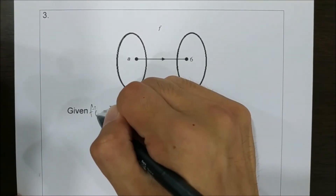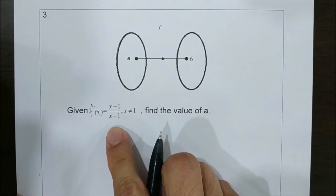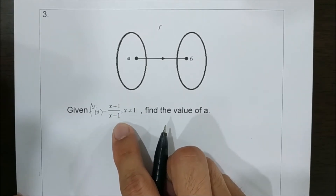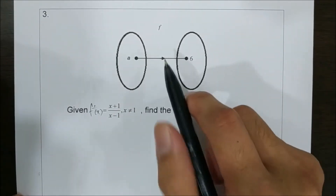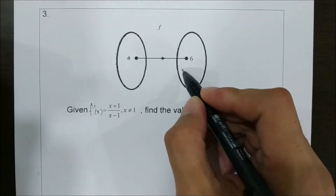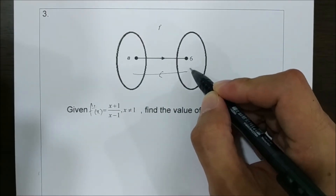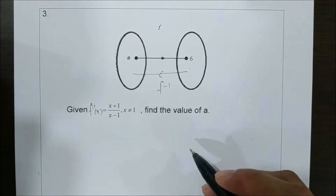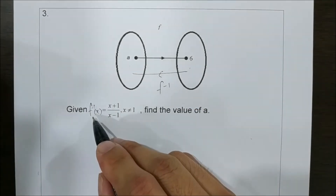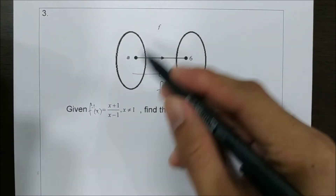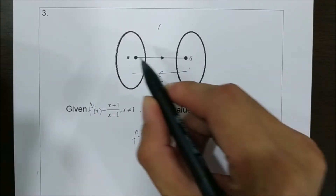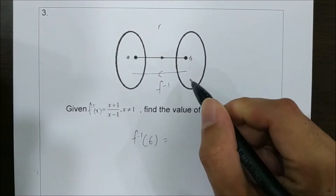The next question: f inverse of x equals to x plus 1 over x minus 1, where x is not equal to 1, because you cannot have the denominator equal to 0 or else it will be undefined. Find the value of a. We look at the diagram given — from a to 6 is under function f, so from 6 to a is actually the inverse of f. Since the inverse function is given, we can say that f inverse of 6 equals a.